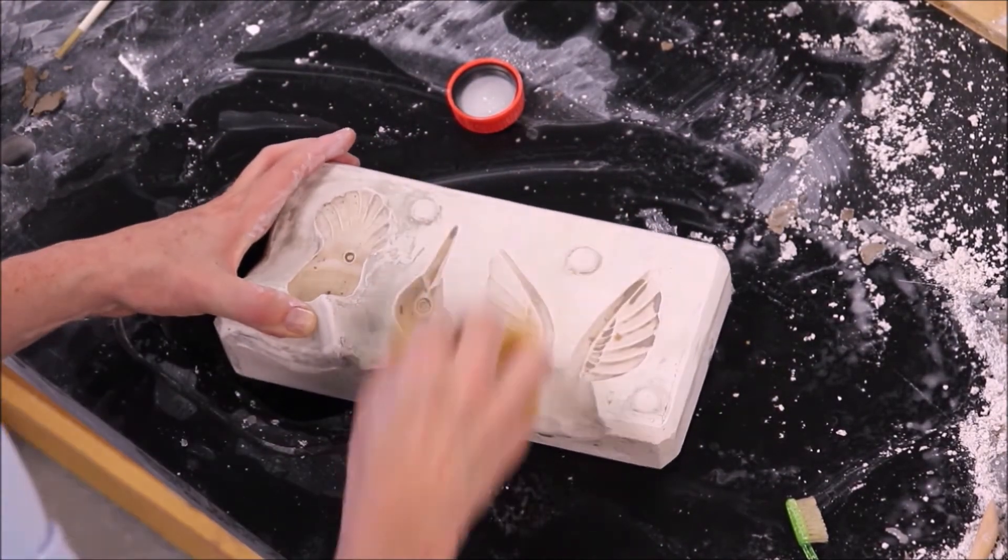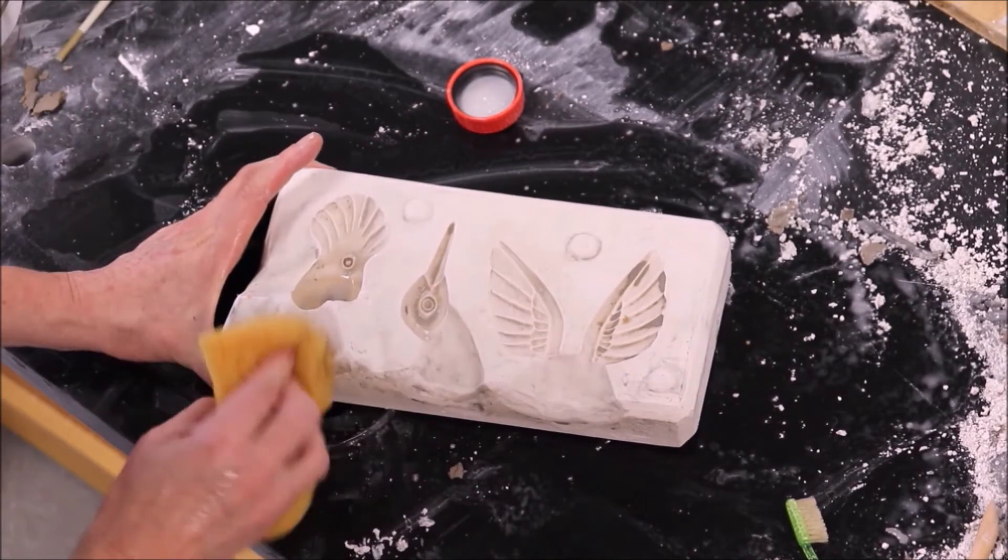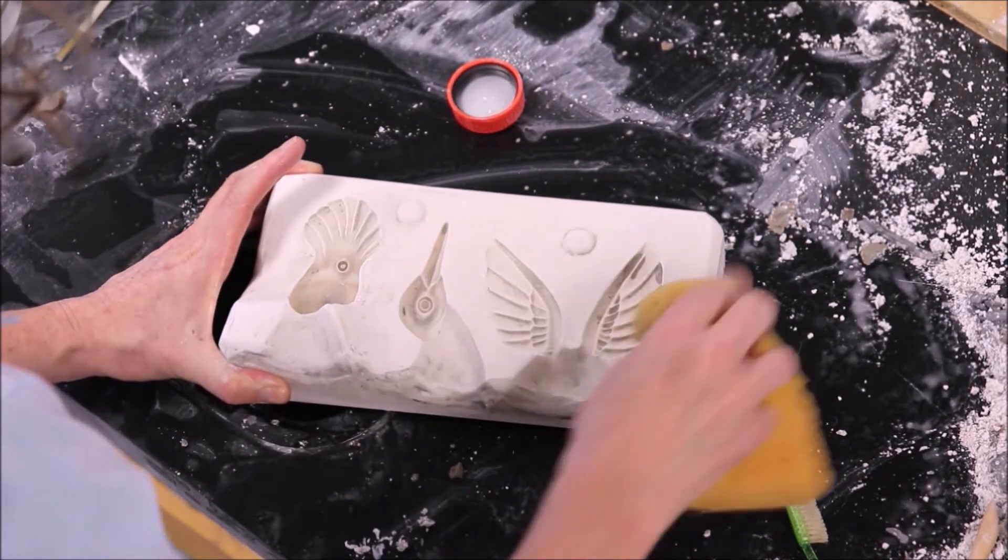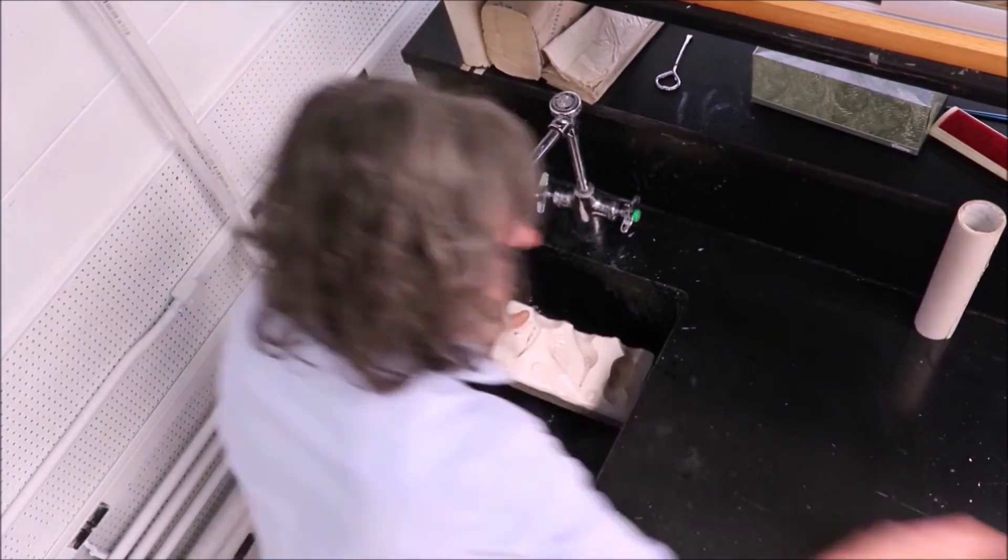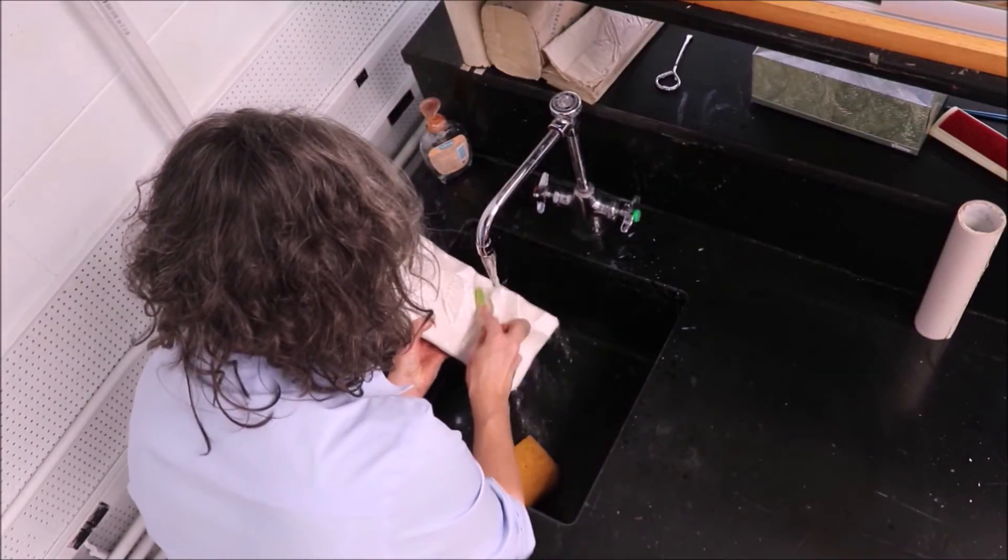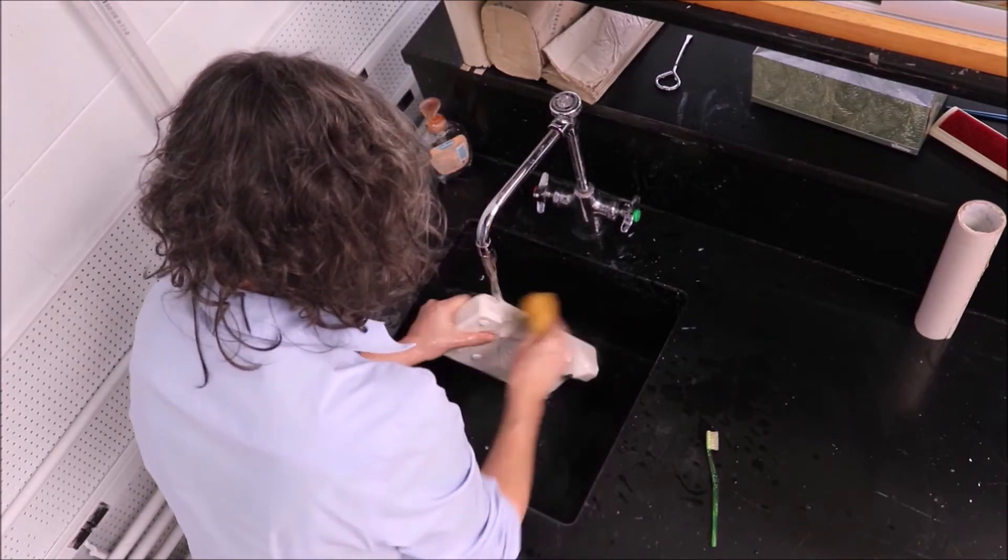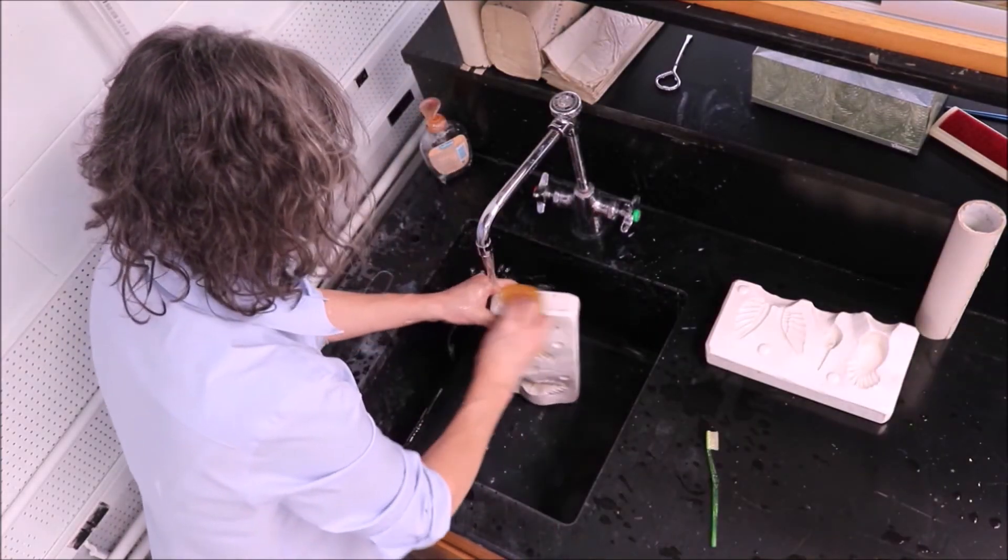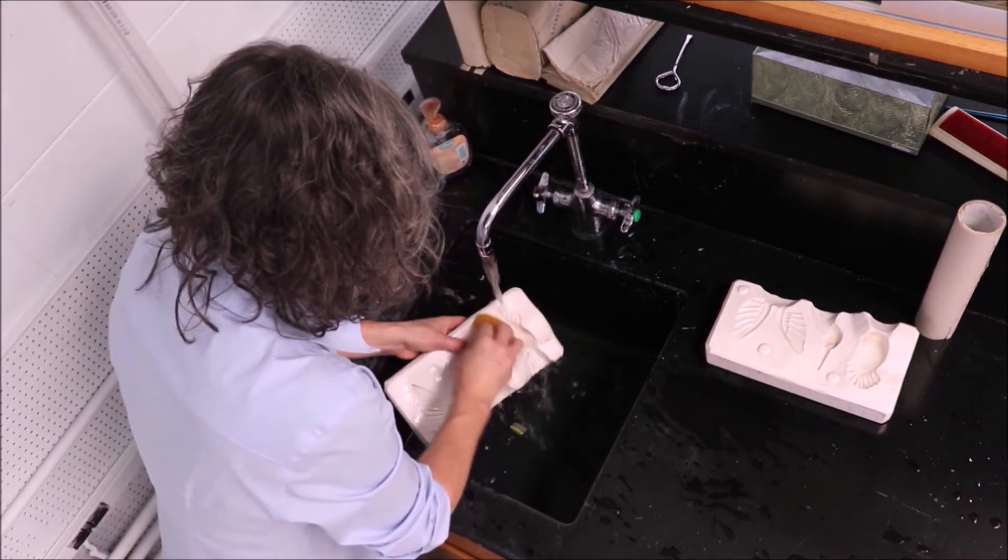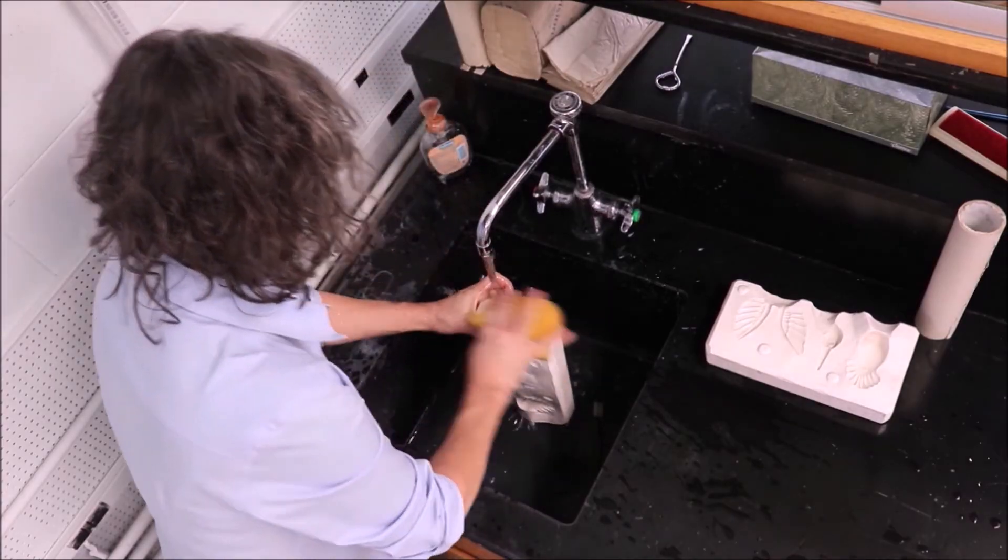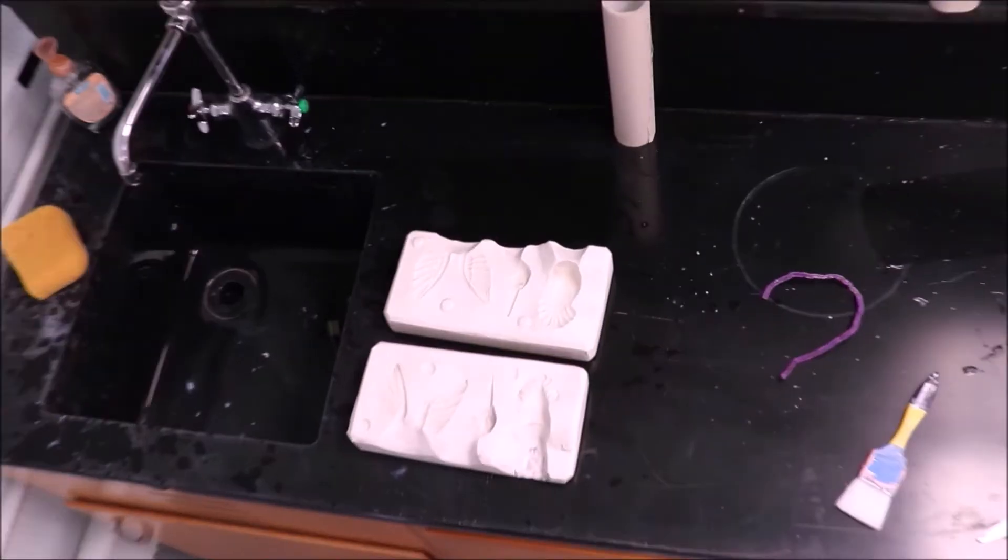Once you get it all cleaned up, it's still not yet ready to cast. It needs to dry before you can slip cast with it. Because what you have now is a fully saturated sponge, essentially. The plaster is a fully saturated sponge. And in order for the plaster to do its job, it needs to be dry. So that when you pour the liquid slip inside your mold, the plaster is dry and it soaks out the water out of the slip and turns it into a nice even clay wall. So if your mold is really wet, if it's saturated with water, it's not going to be able to draw any more water out of the slip. And so it's not going to work. So it depends on how big your mold is and how dry your climate is. You can let it air dry and maybe it'll take about a week. I often put them in front of a fan and it takes a couple of days.